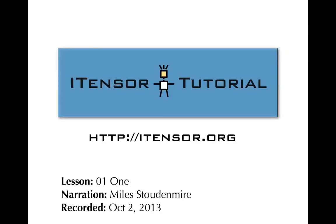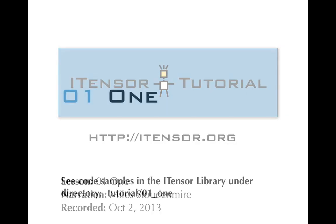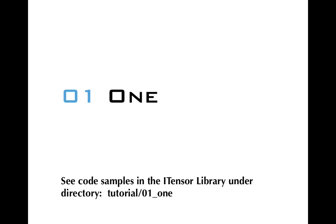Welcome to the second tutorial video for the itensor library. This lesson has companion code that you can find under the main directory of the itensor library, under the folder tutorial, and then 01_1.